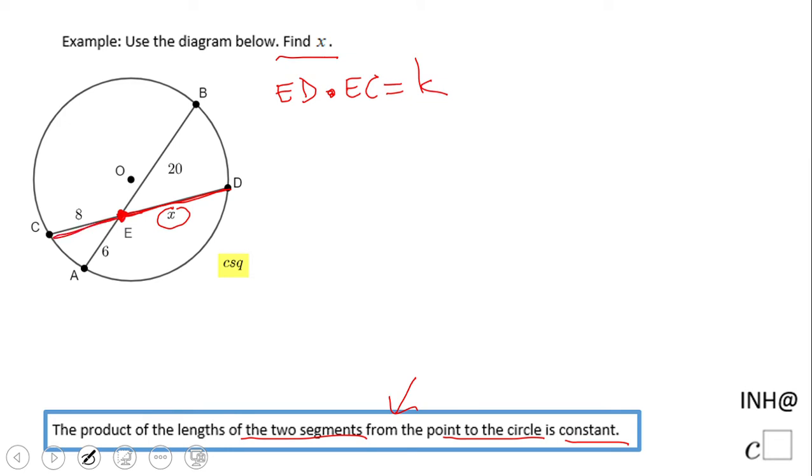But also, you notice E is part of another chord, this one. So we can write the same statement: EA times EB equals that constant. In fact, what you want to write is ED times EC equals EA times EB. That's the thing you probably want to start with. This is what this theorem says.